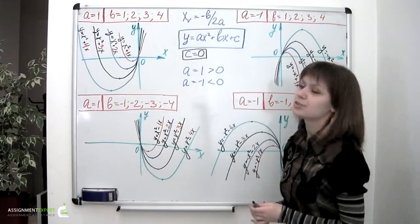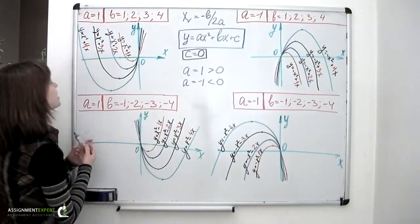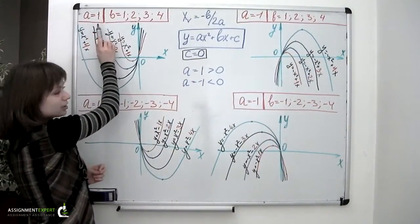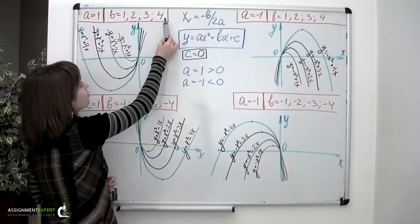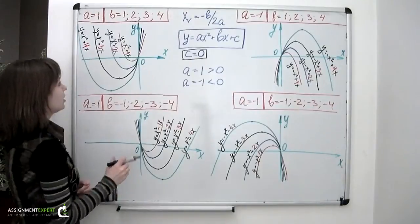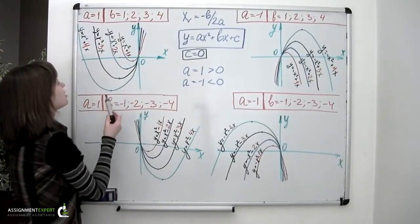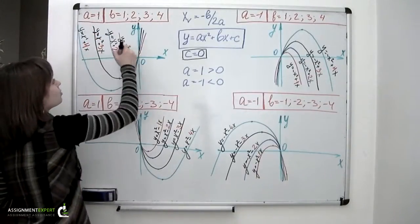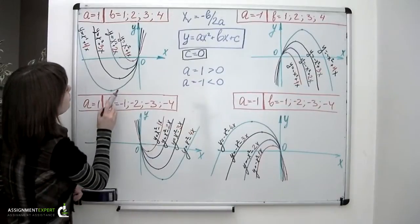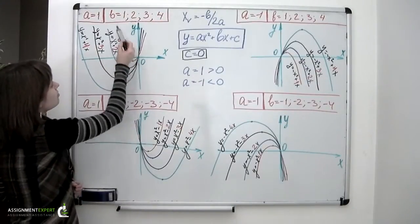So let's move to our top left corner. And here we have a set to the value of 1. And b set to the values of 1, 2, 3 and 4. Here we have 4 parabolas. All of them are opened up, obviously because a is a positive number. The red one in the middle is described by an equation x squared plus 1 times x. So 1 is for b.